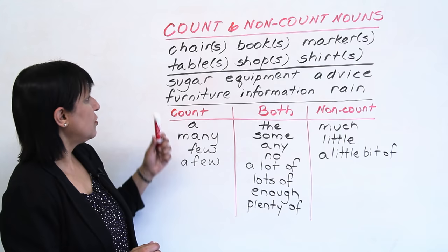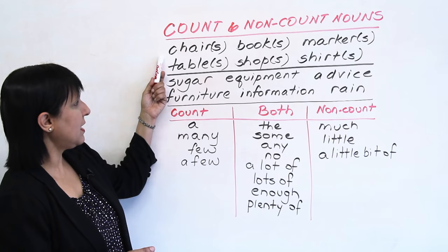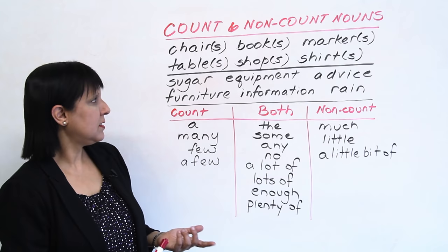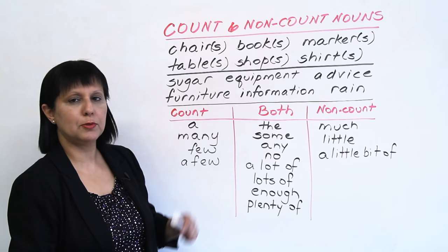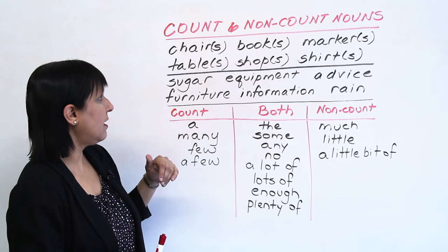So let's look at the board. First, let's look at some examples of countable nouns. Countable nouns are things you can count, like chair, chairs, table, tables, books, shops, markers, shirts. They can be singular or plural, and usually the plural form has an S. So those are the countable nouns.